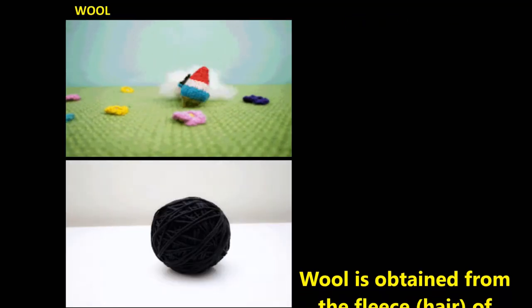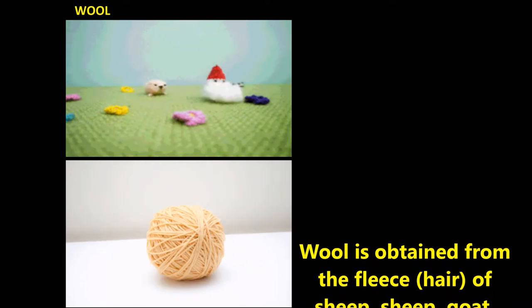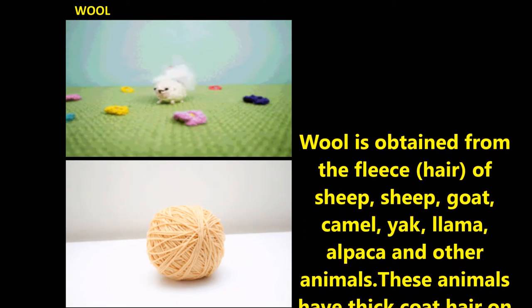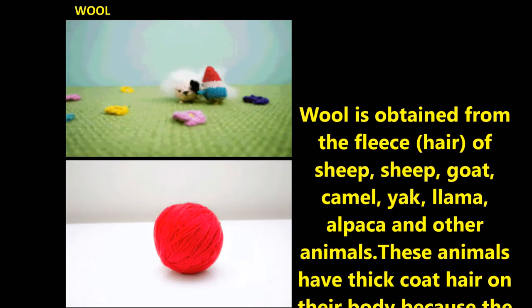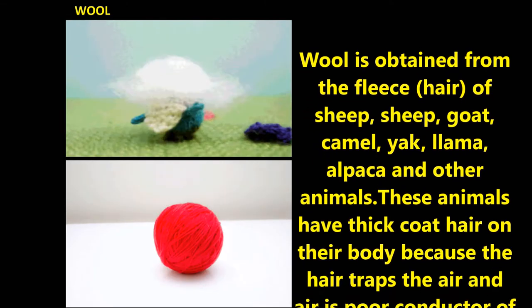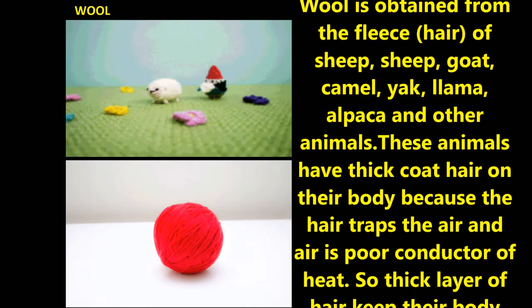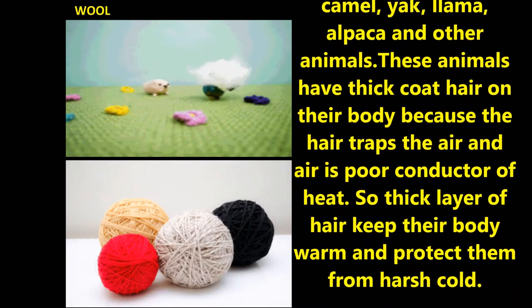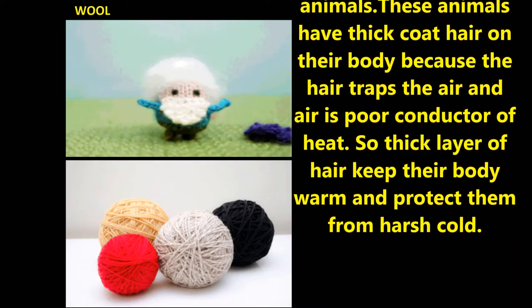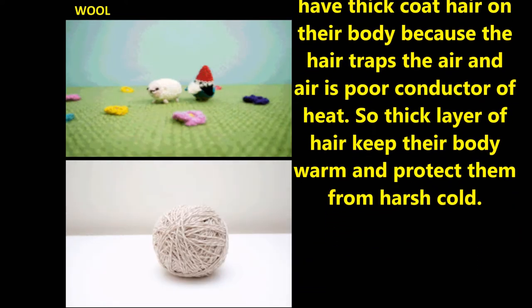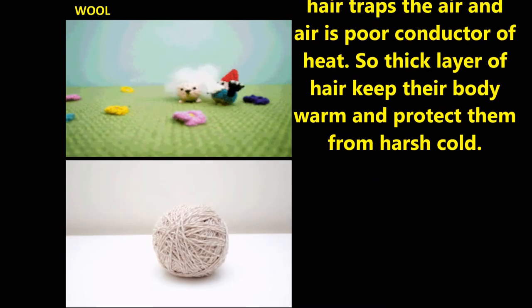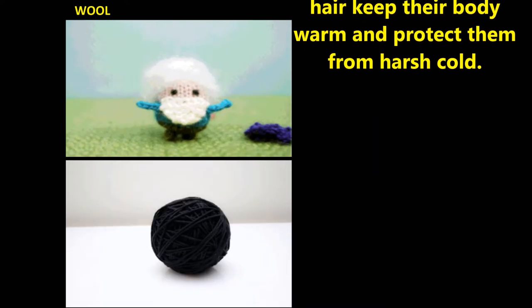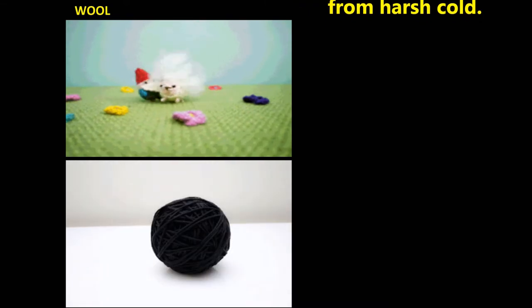Now let us discuss about wool. Wool is obtained from the fleece of sheep, goat, camel, yak, and other animals. These animals have a thick coat of hair on their body because their hair traps air, and air is a poor conductor of heat. So the thick layer of air keeps their body warm and protects them from harsh cold.